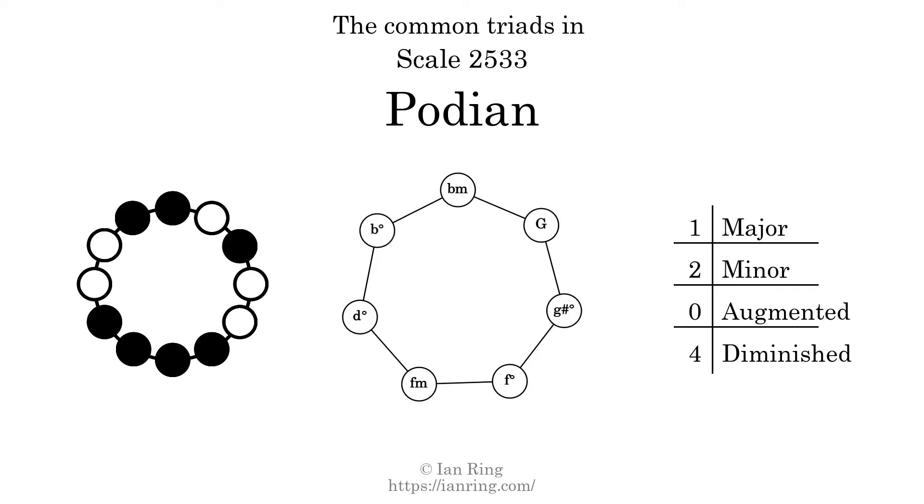Here is the Hamiltonian path of parsimonious voice leading that uses all the triads.